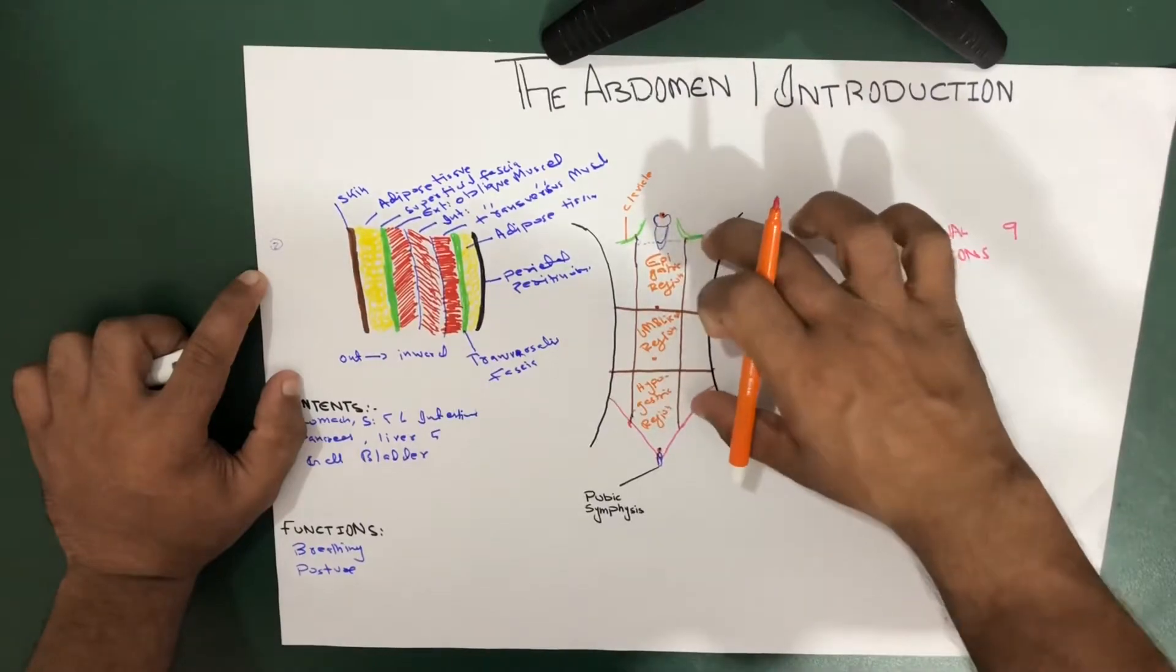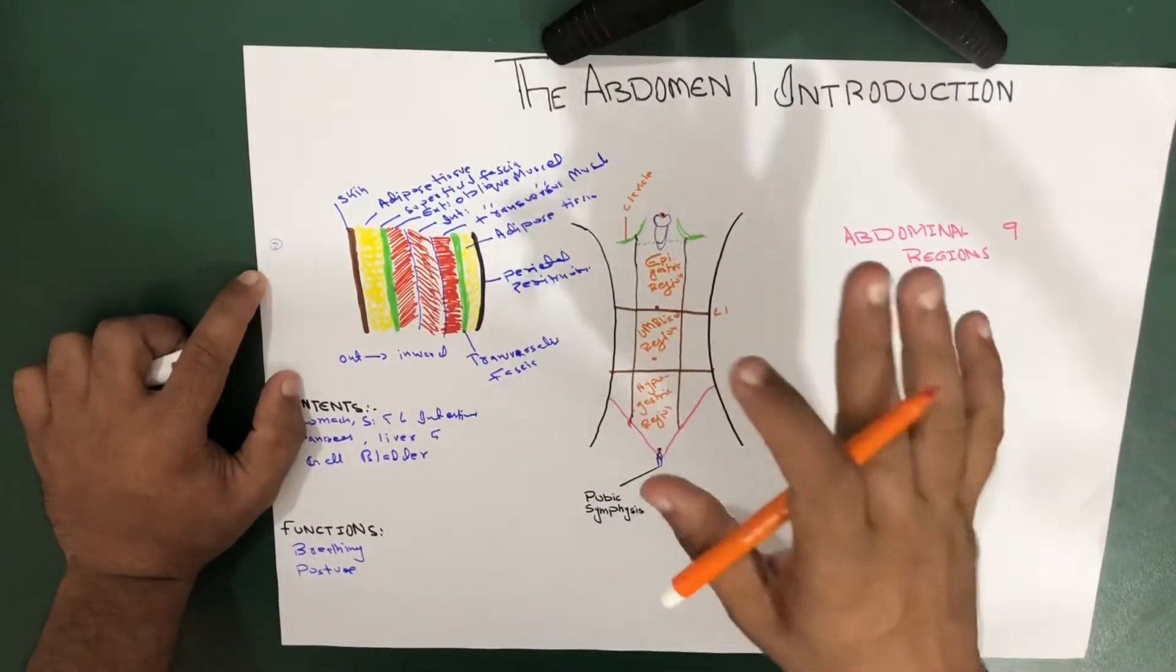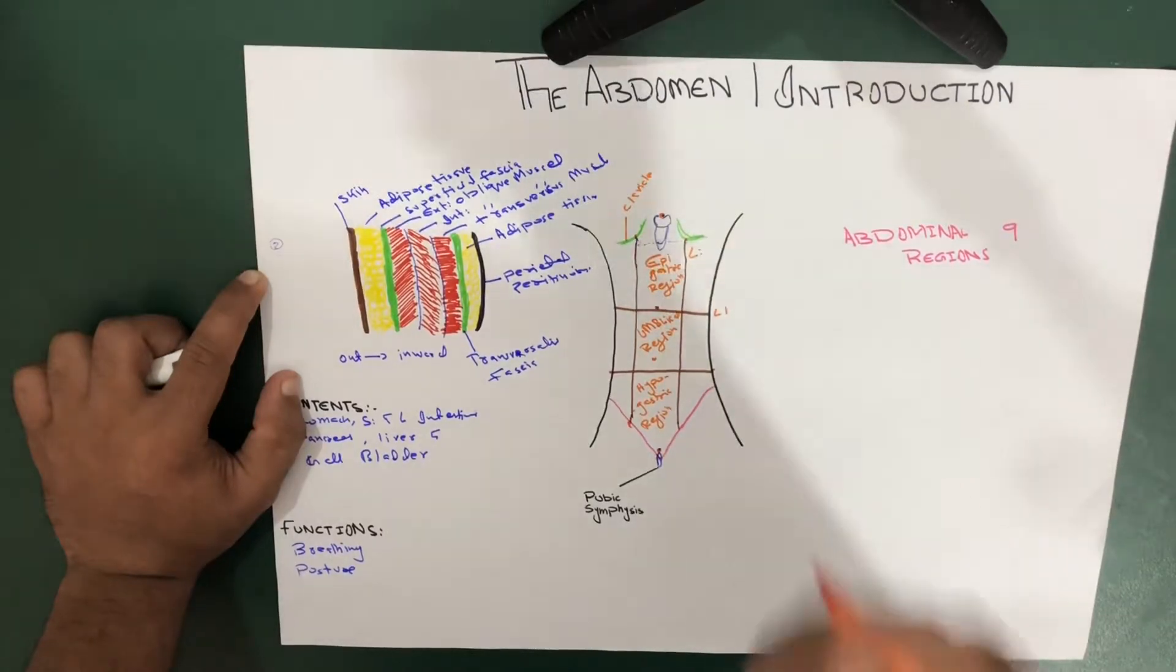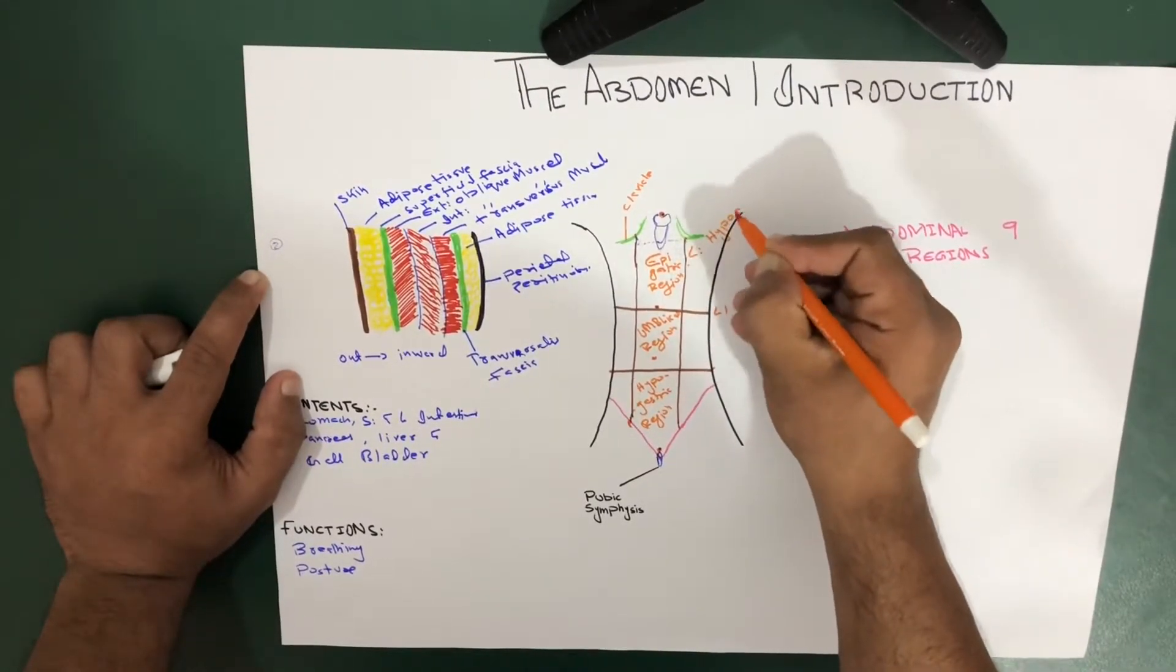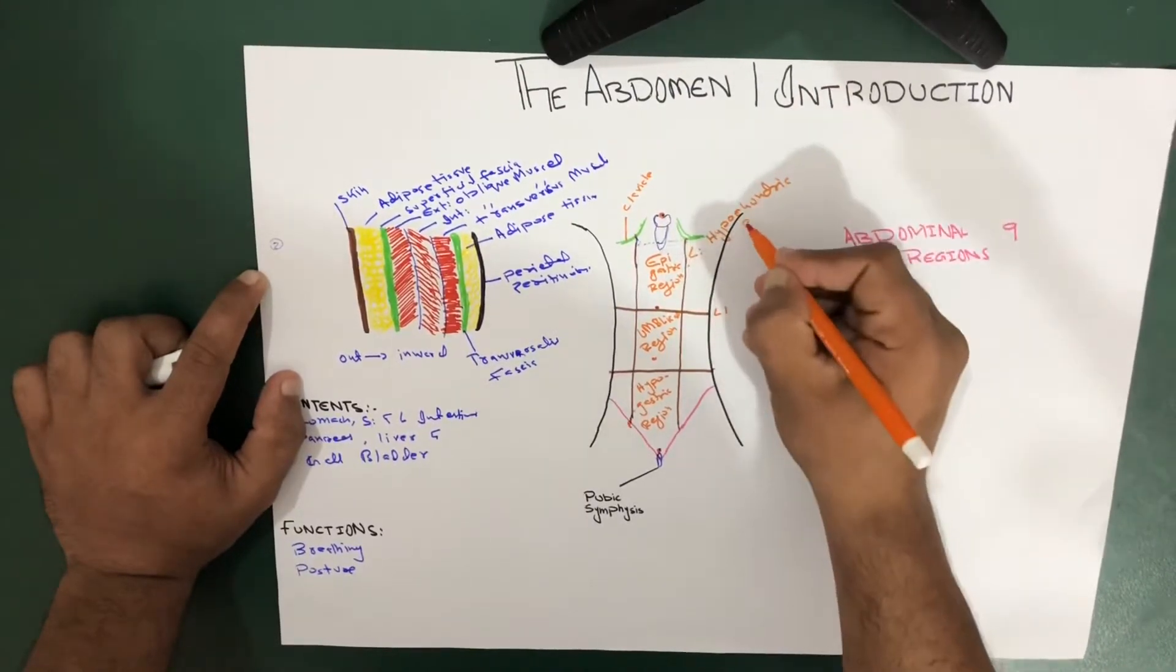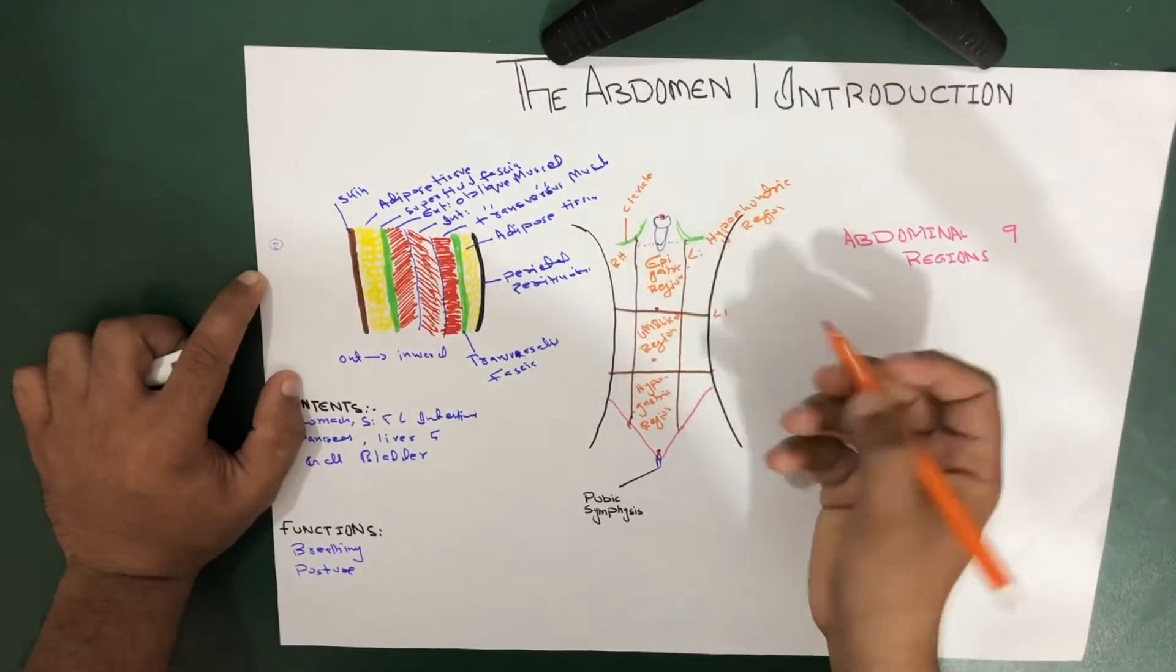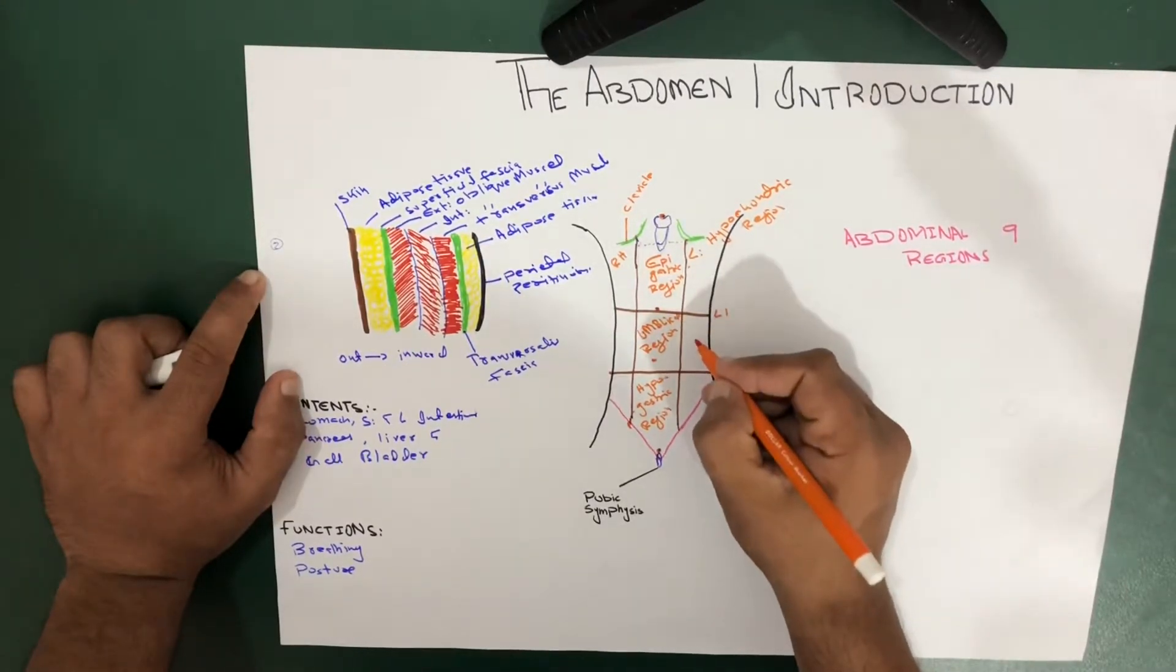But as we talk about this one, the names that are here are also applied on the right side, so there's a difference of the words right and left. So we have got left hypochondriac region, just write it down. So this is left hypochondriac region, so this is right hypochondriac region.